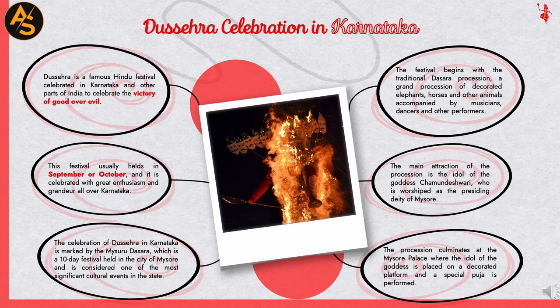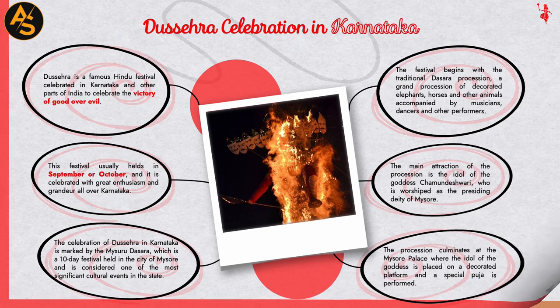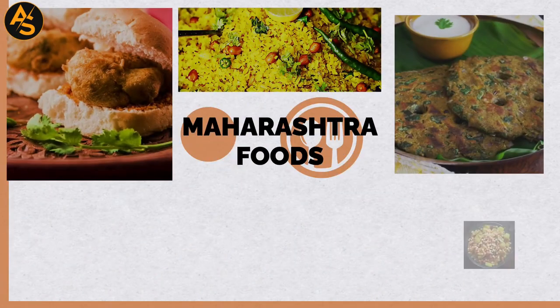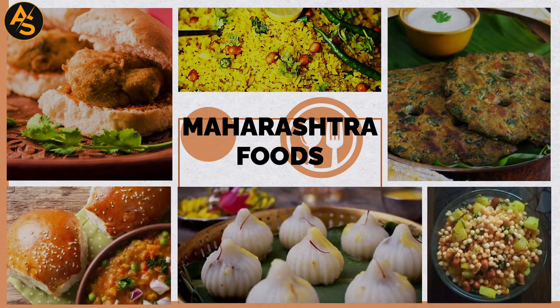The festival begins with the traditional Dasara procession, a grand procession of decorated elephants, horses, and other animals accompanied by musicians, dancers, and other performers. The main attraction is the idol of the Goddess Chamundeshwari, the presiding deity of Mysore. The procession culminates at the Mysore Palace, where the idol is placed on a decorated platform and a special puja is performed.